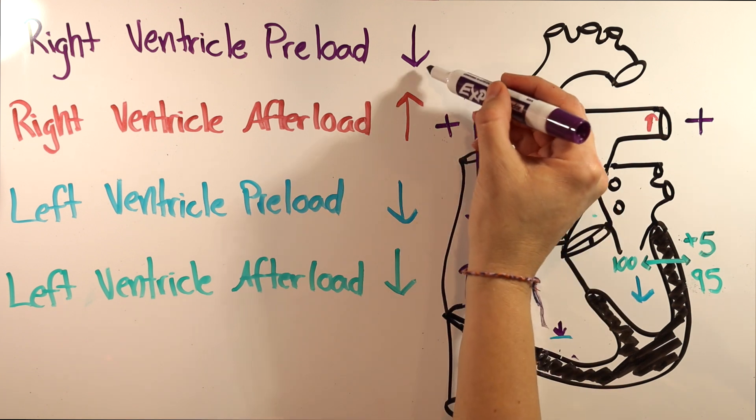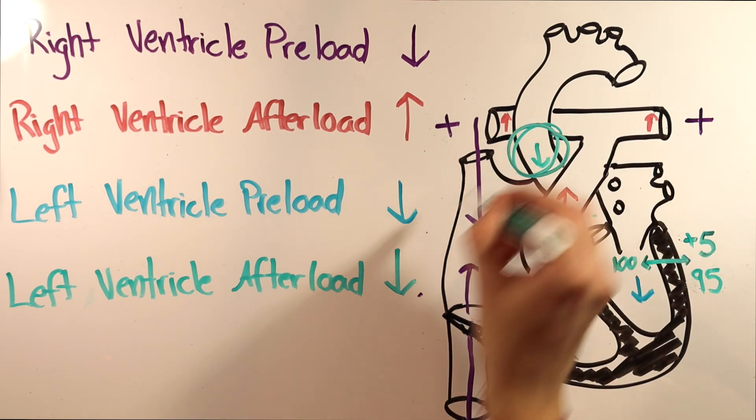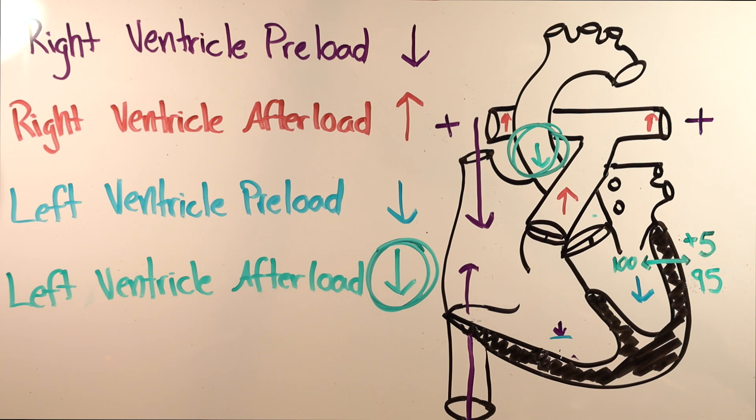Now we have three things that make the heart work harder, and one thing that makes it work less. What wins? At least 9 times out of 10, the reduction in LV afterload wins, and intubating the patient will make the heart happier.